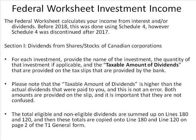Section 1 of the Federal Worksheet covers dividends from shares or stocks of Canadian corporations. For each investment, provide the name, quantity if applicable, and the taxable amount of dividends provided on the tax slips from the bank. Note that the taxable amount of dividends is higher than the actual dividends paid to you, and both amounts are provided on the slip — it is important they are not confused. The total eligible and non-eligible dividends are summed on lines 180 and 120, and then these totals are copied onto lines 180 and 120 on page 2 of the T1 General Form.